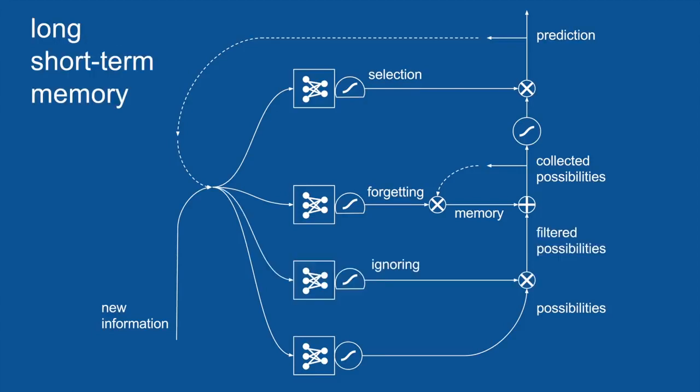And the only other piece we need to add to complete our picture here is yet another set of gates. This lets us actually ignore possible predictions, possibilities, as they come in. This is an attention mechanism. It lets things that aren't immediately relevant be set aside so they don't cloud the predictions in memory going forward. It has its own neural network, and its own logistic squashing function, and its own gating activity right here.